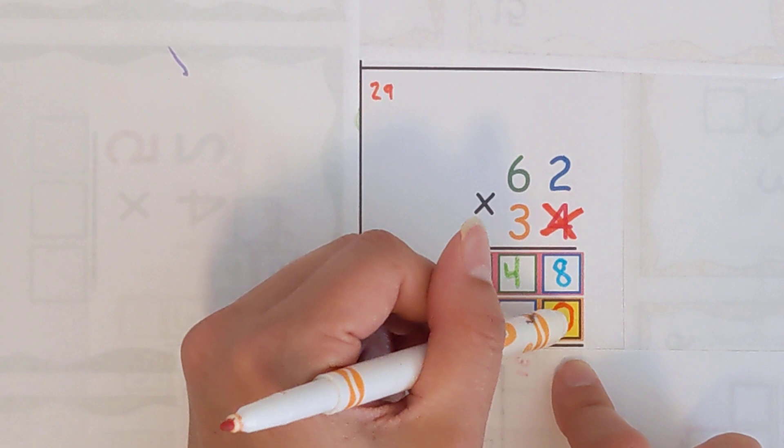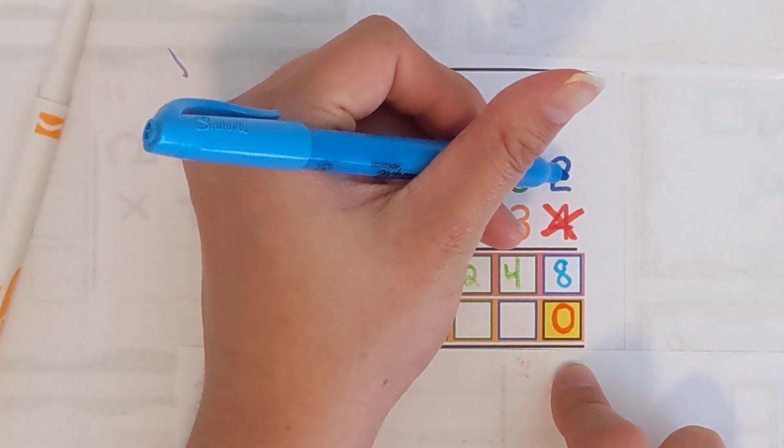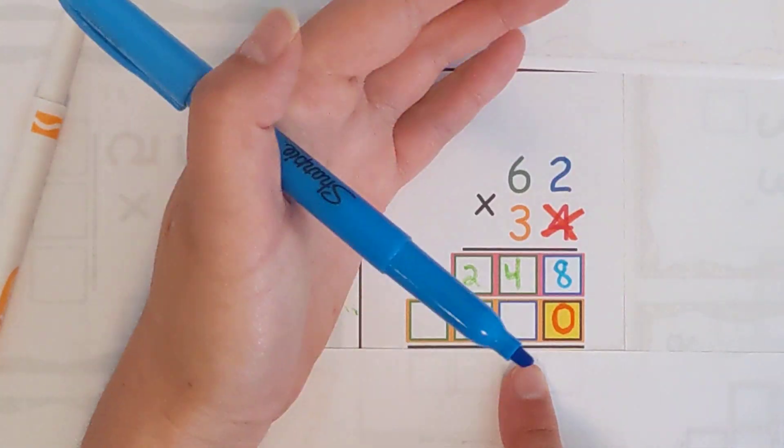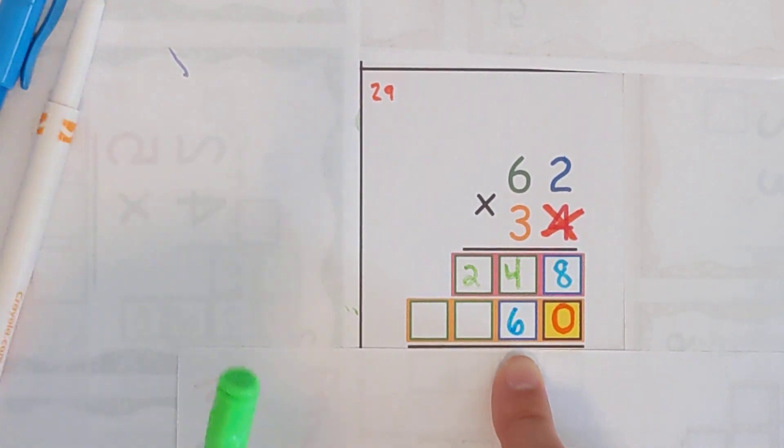So just remember to put that zero in and then you just follow the steps like last time. So three times two and put it here and then three times six. Go ahead and try that. Three times two is six and then three times six is 18.